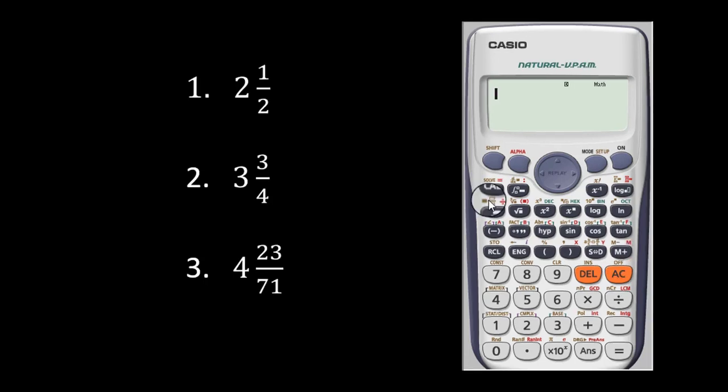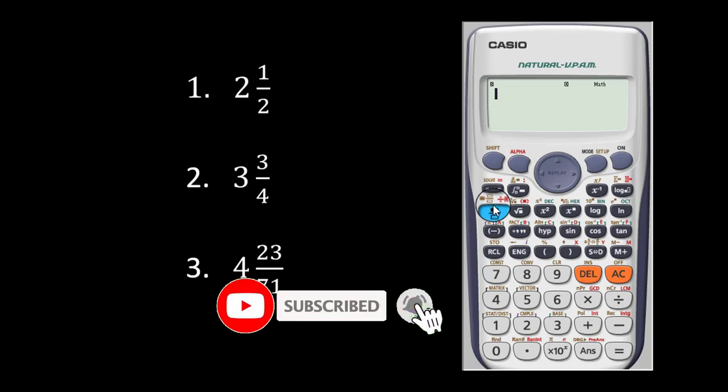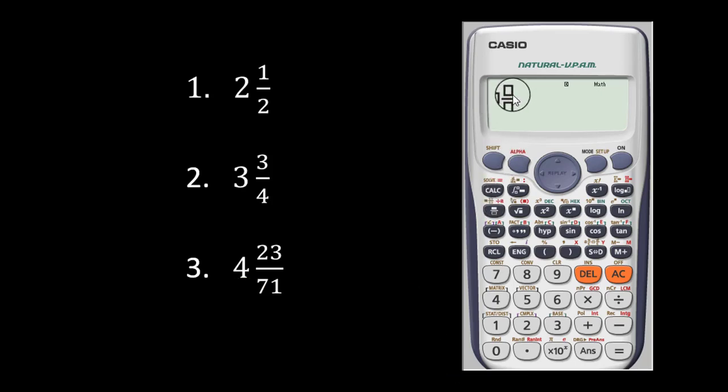Now let's proceed further. So before we can change any of these fractions to an improper fraction, we need to first of all key it in. Alright, so you press the shift key and then you press the fraction key to have your improper placeholder displayed.